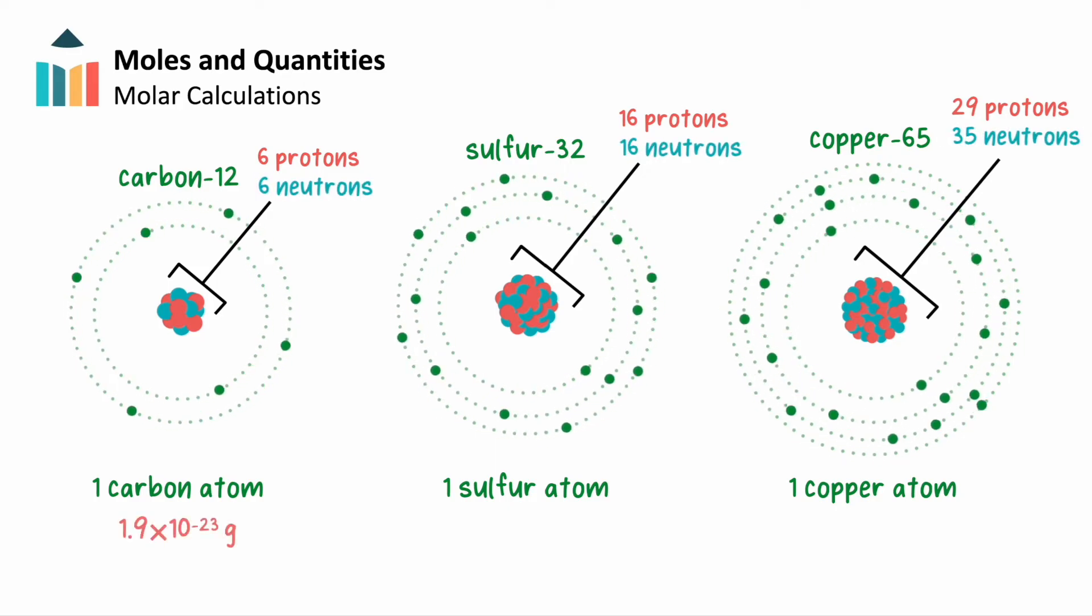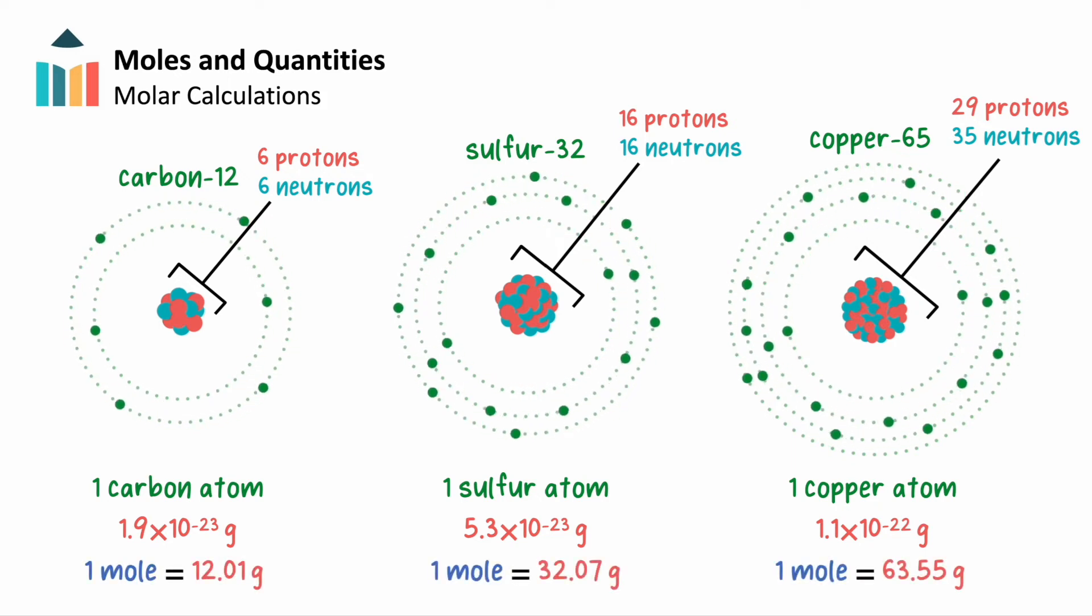The masses of carbon, sulfur, and copper atoms are each unique. Therefore, just like eggs, donuts, and elephants, the masses of one mole of carbon, sulfur, and copper are also each unique.